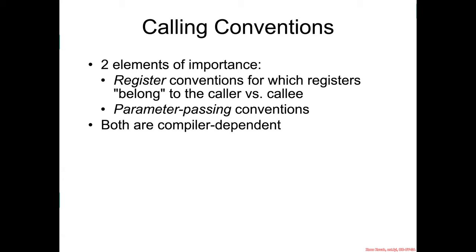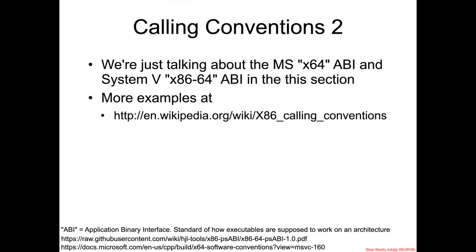This was much more of a problem when there were many more compiler makers around, but over time the number has decreased. In this class, we're only going to be talking about the Microsoft X64 ABI, which is used by the compiler behind Visual Studio, and the System V X86-64 ABI, which is used by Unix-derived systems like Linux, BSDs, and also macOS. The links to the ABI documentation are given at the bottom of this page, and there are a lot of interesting bits and caveats I'm glossing over, so I recommend you check out that documentation later.